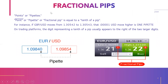Fractional pips are called points or pipettes. These pipettes are equal to one tenth of a pip. For instance, if the GBP/USD moves from 1.30542 to 1.30543, that is a 0.00001 USD move higher and is one pipette, as you can see right here.